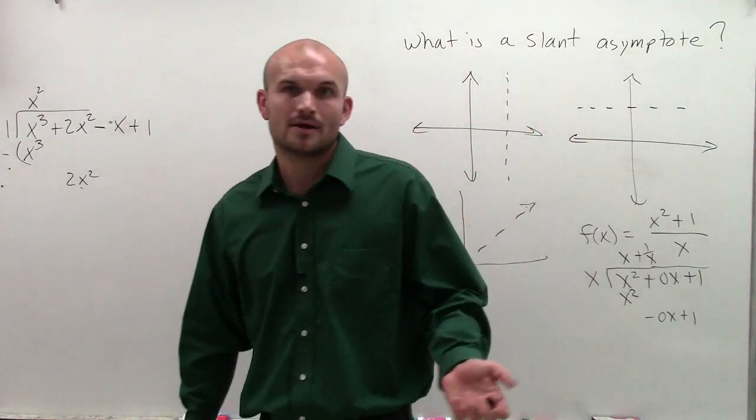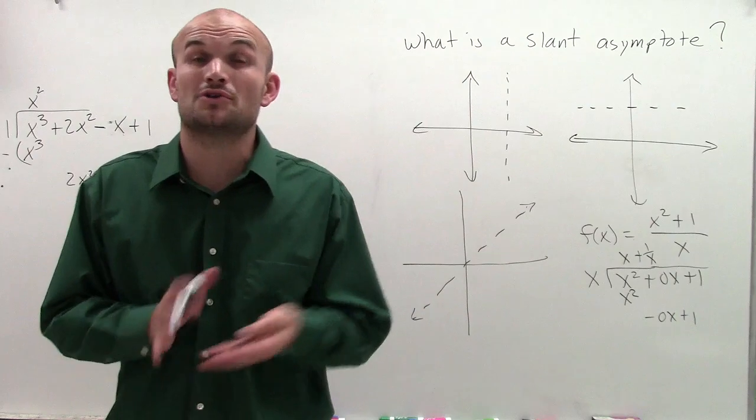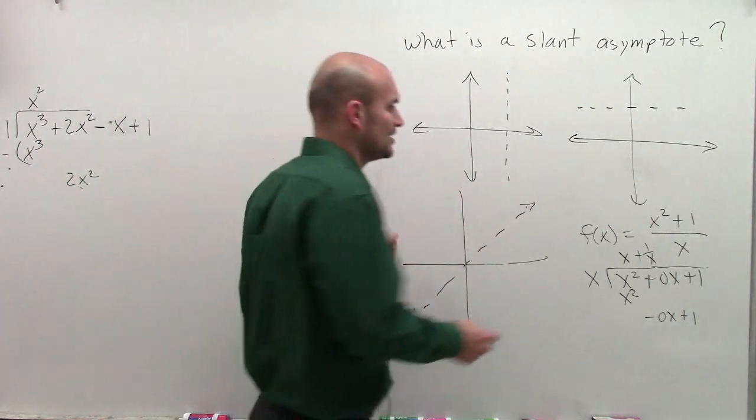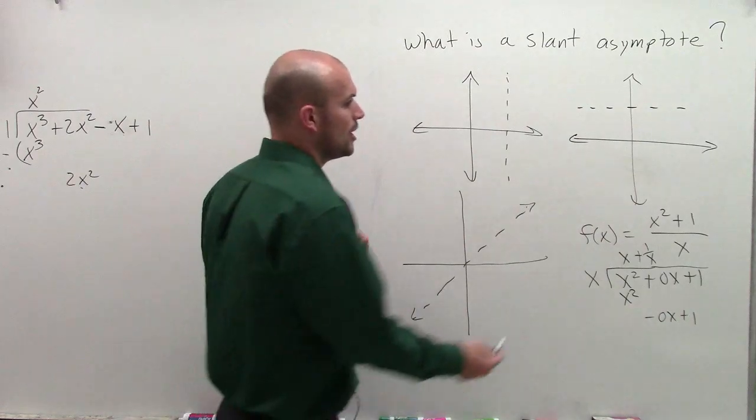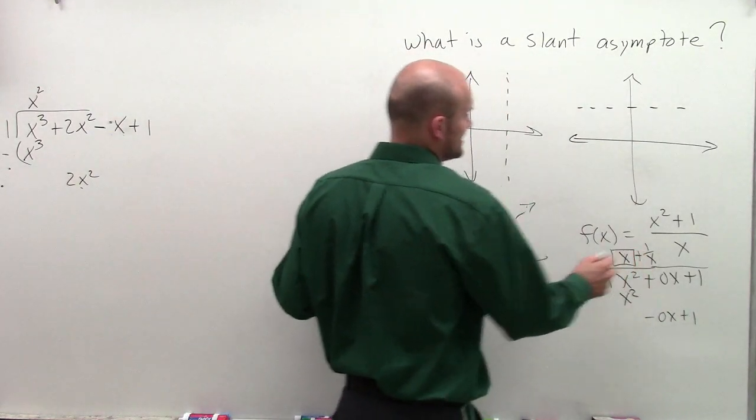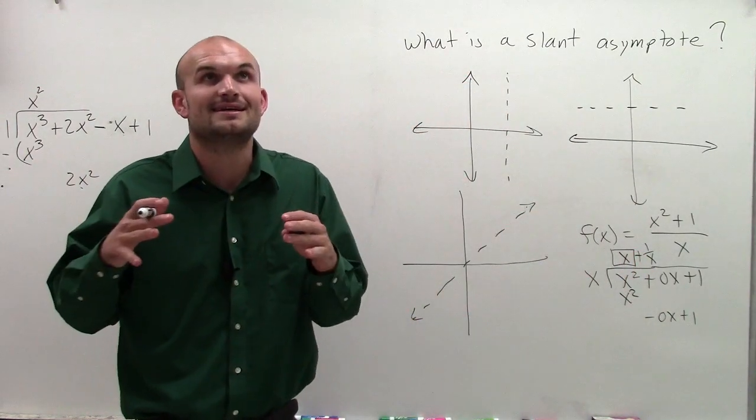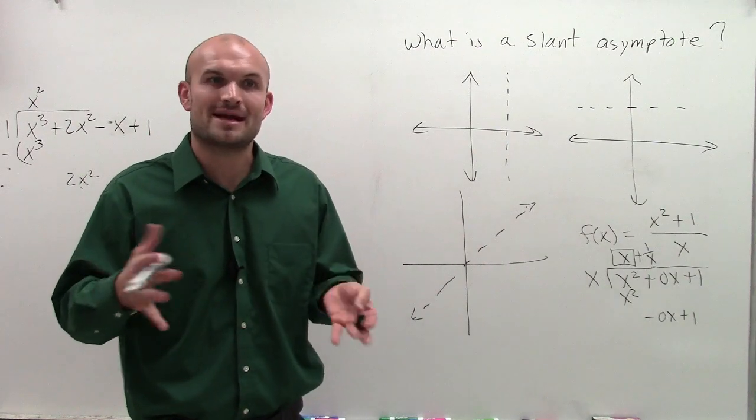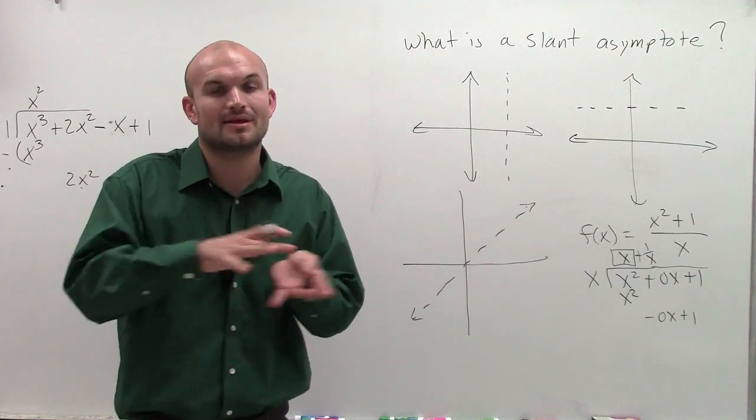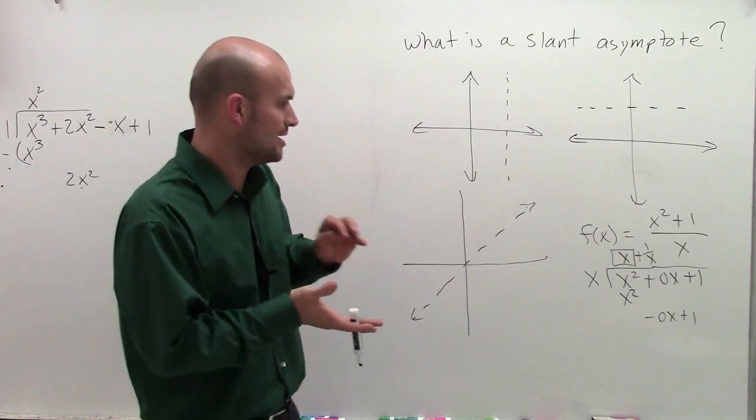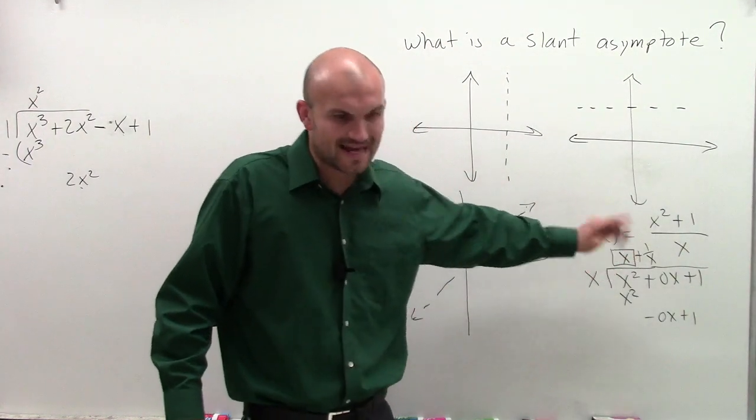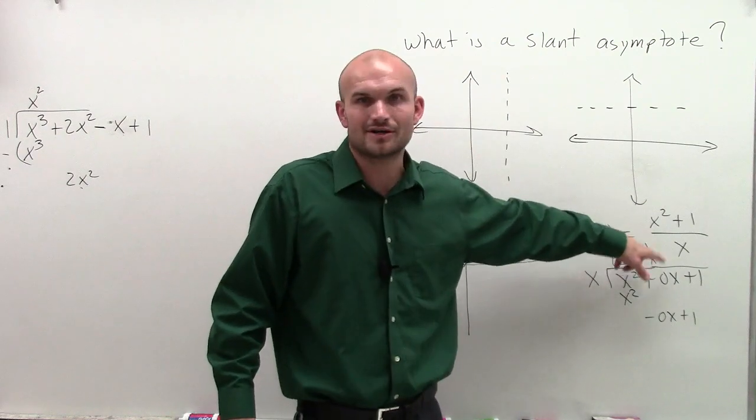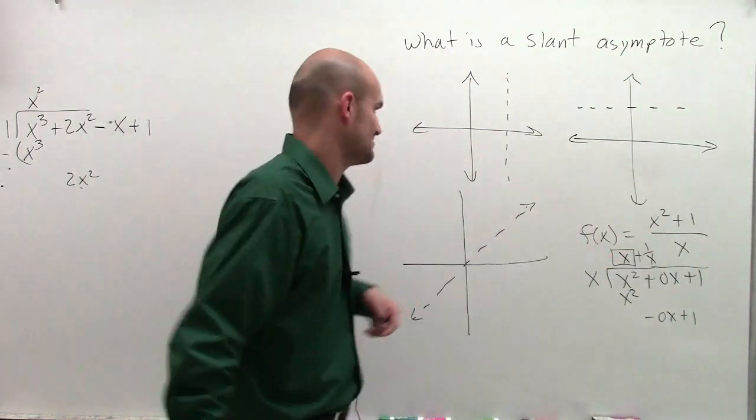Now our remainder, whenever you're dealing with your remainder, that's going to go to infinity. So we're not going to be concerned with our remainder. However, if I just want to find my slant asymptote, all I'm going to do is take my quotient and not care about my remainder because as it goes to infinity, it's going to go to 0, which will not affect my slant asymptote.